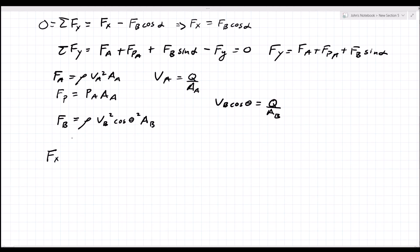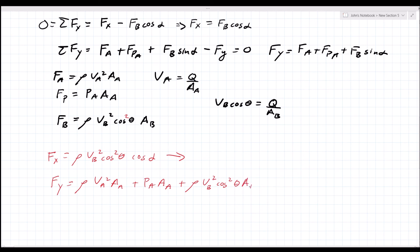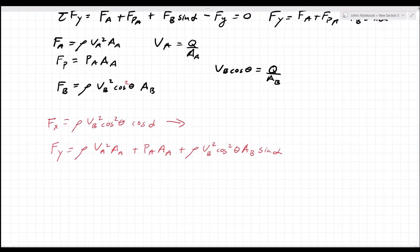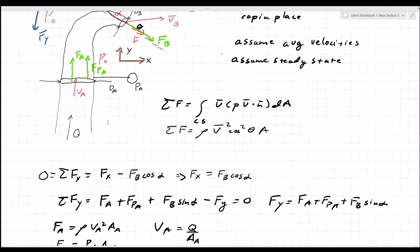Plugging in: the force in the x direction equals rho vb squared cosine squared theta times cosine alpha. The force in the y direction equals rho va squared times area A, plus pressure at A times area A, plus rho vb squared cosine squared theta times area B times sine alpha. These two forces in the x and y directions are what must be applied to the cap to hold it in place.